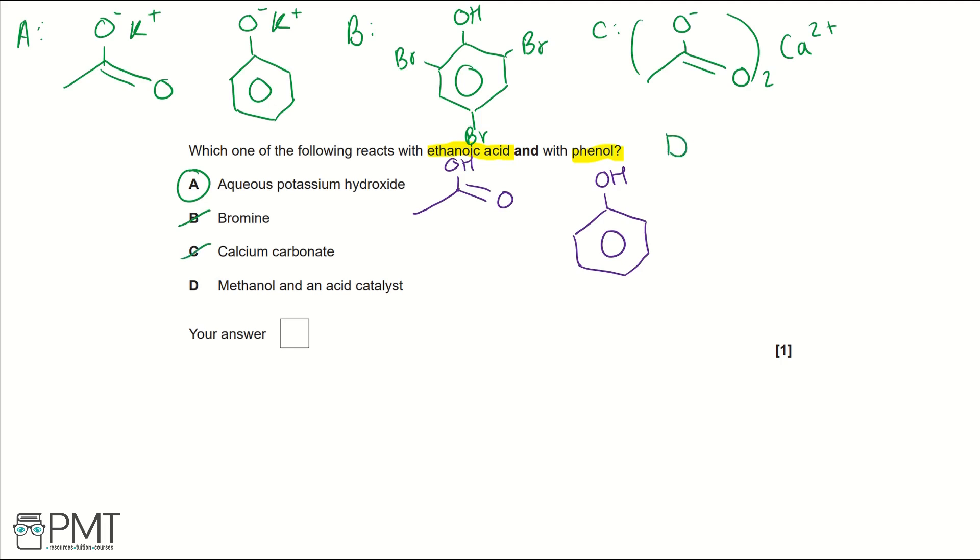Finally, looking at D, we have methanol and an acid catalyst. These are the reagents for esterification, but you need a carboxylic acid, which can be found in ethanoic acid where we have this ester group being formed. The double-bonded oxygen comes from the carboxylic acid and the single-bonded oxygen comes from the methanol. Here we've got our ester, but it doesn't react with phenol because phenol doesn't have a carboxylic acid group to form an ester.